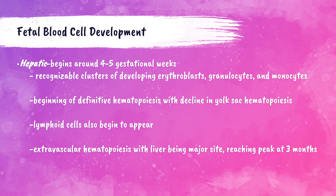In this stage, recognizable clusters of certain cells begin to develop, including erythroblasts, granulocytes, and monocytes. Erythroblasts are the first precursor to erythrocytes — think of them as baby red blood cells, because erythrocytes are red blood cells.